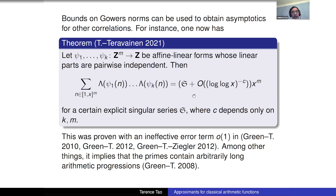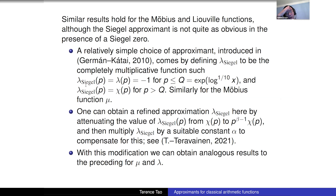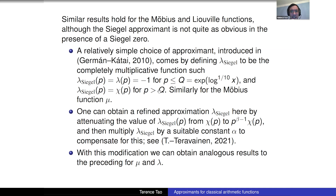Now what about the Liouville function and Möbius function? There are analogous Siegel models for these. The Siegel modification of Liouville: for small primes you keep the value −1, but for large primes you replace −1 by the exceptional character χ, then complete multiplicatively. This gives a Siegel approximation for λ and μ with similar error bounds.